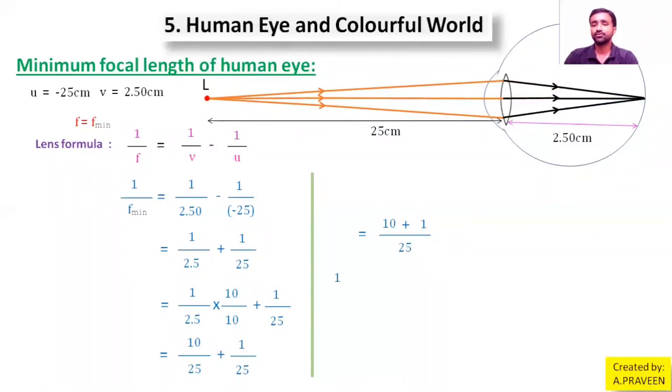Taking reciprocals on both LHS and RHS side. Therefore f_min equals 25/11. Then cancel it with the 11 table. 11 two times is 22, put the point, then it will become 30. So here 11 twelve times you are able to cancel, then the remaining is right. Seven times it will be cancelled. So I got 2.27. Therefore f_min = 2.27 centimeters.